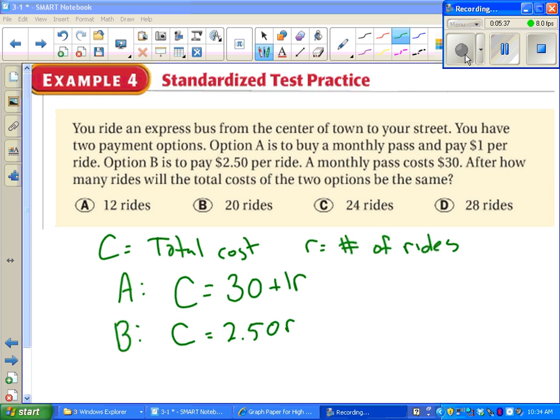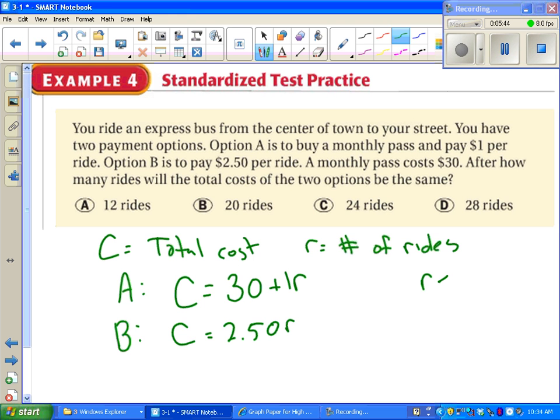Like most word problems, we now have to figure out what a good range for our x values and y values are. Or in this case, it's r values and c values. A good choice for the r values come from our answer choices. Looks like our smallest choice is 12 and our biggest choice is 28, so why not use those for my minimum and max?